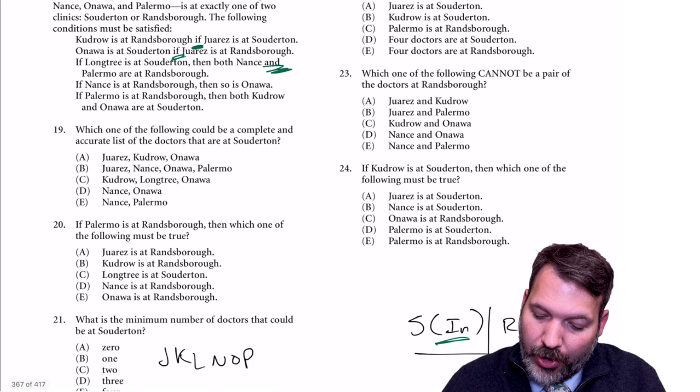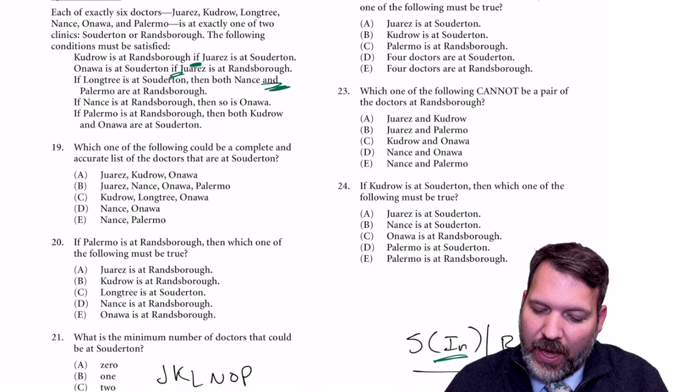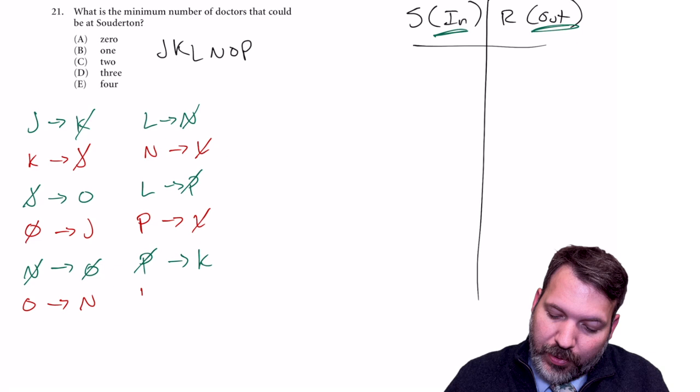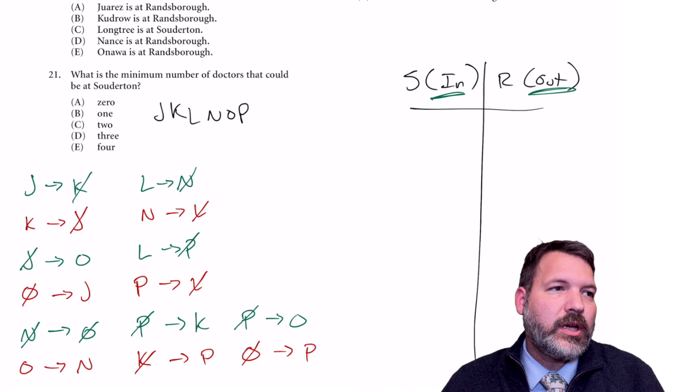Fourth clue: if N is out, O is out. Contrapositive: if O is in, N is in. Fifth clue: 'if P is out, then both K and O are in.' AND is on the consequent side again — splittable. So: if P is out, K is in (contrapositive: if K is out, P is in) and if P is out, O is in (contrapositive: if O is out, P is in).